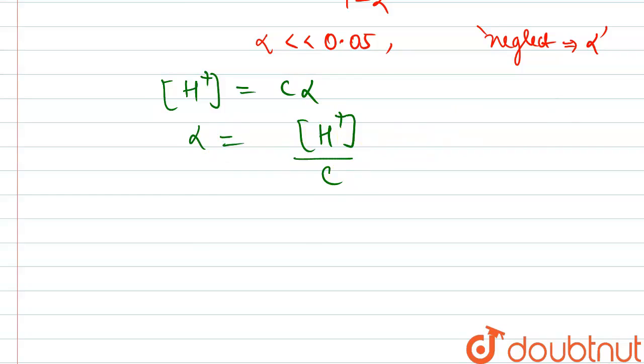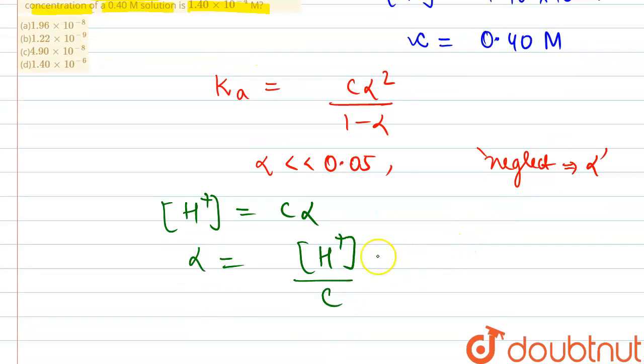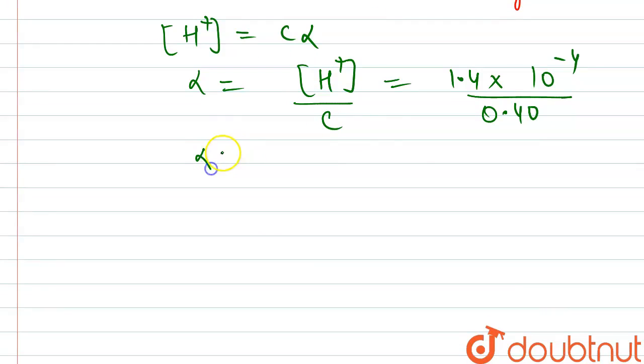From here, α will become H+ ion concentration divided by C. We would be substituting the given values: 1.40 × 10^-4 divided by 0.40. On solving this, the value of α comes out to be 3.5 × 10^-4.